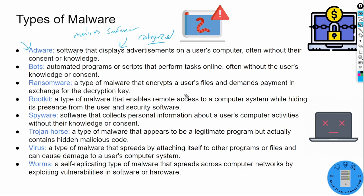Starting with adware — we have a bunch of advertisements running. Bots — we've talked about botnets, DDoS (distributed denial of service) attacks, zombies and botnets. It's becoming pretty much a zombie or a bot that's going to do something on behalf of the attacker. Ransomware is very hot right now — threat actors come in, encrypt the company's data, demand Bitcoin payment, and threaten to post sensitive exfiltrated data to a leak site.